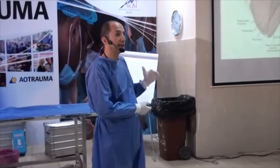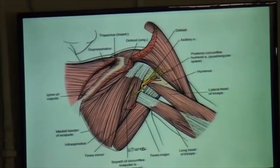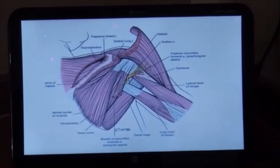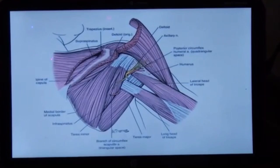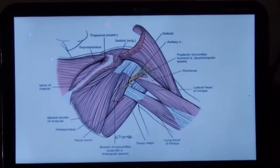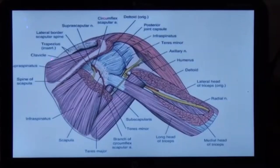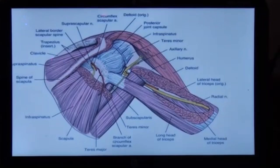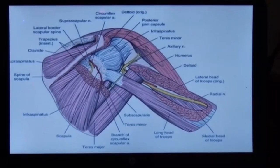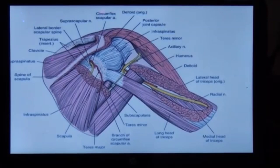In the cadaver lab, we reflect the deltoid to get a nice view. We have the infraspinatus, teres minor, teres major, and the long head of triceps — these create the quadrangular space, from which the axillary nerve and circumflex vessels emerge. There is also the triangular space, from which the radial nerve comes, though we'll see that more in the posterior humerus approach. Importantly, the triangular space contains the circumflex scapular artery, which is a key reference landmark.